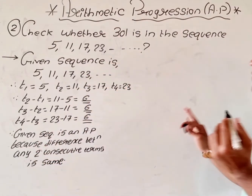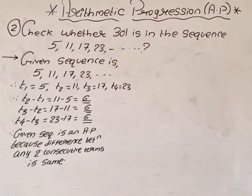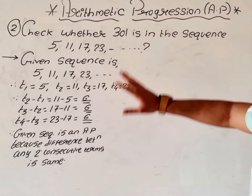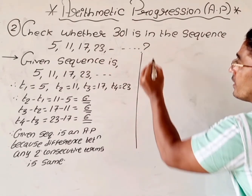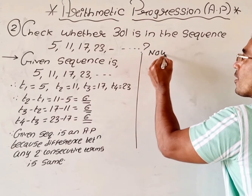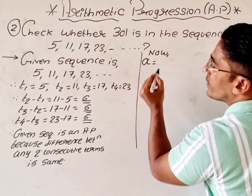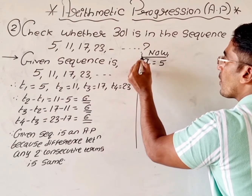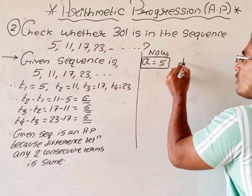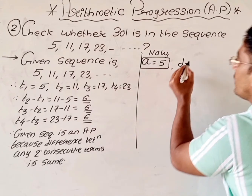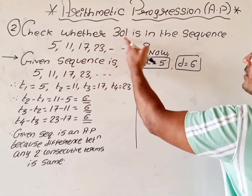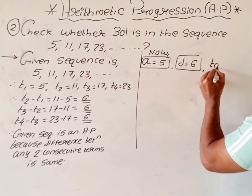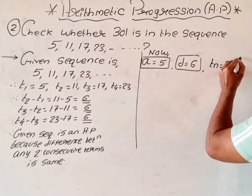Now we checked that the given sequence is an AP. Yes, it is an AP. Now we will see whether 301 is in the sequence. First we will consider A — what is A? It is 5. D is the common difference, which is 6. We have to check whether 301 is in the AP, so T(N) is equal to 301.